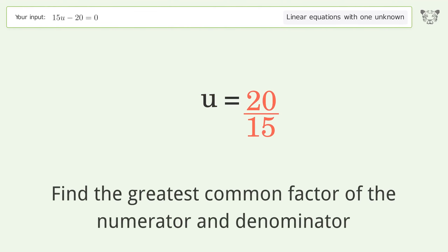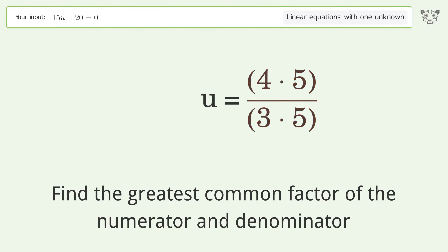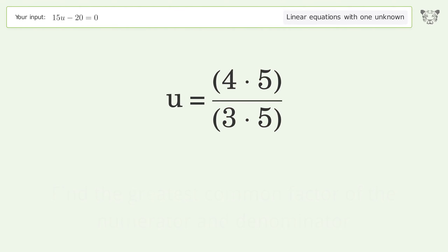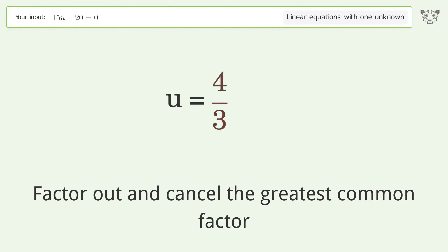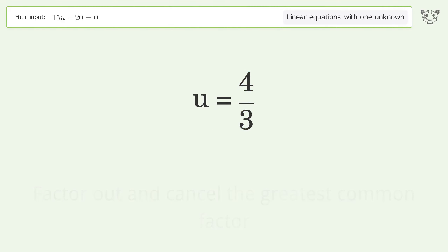Find the greatest common factor of the numerator and denominator. Factor out and cancel the greatest common factor. And so the final result is u equals 4 over 3.